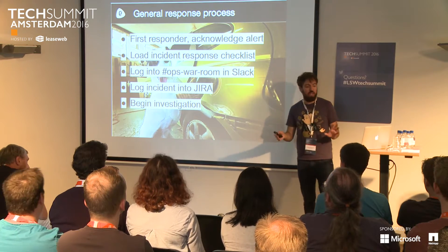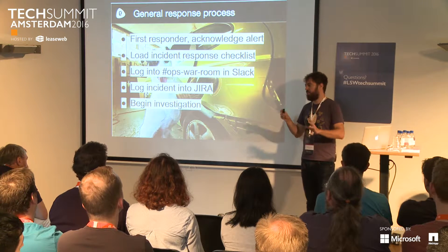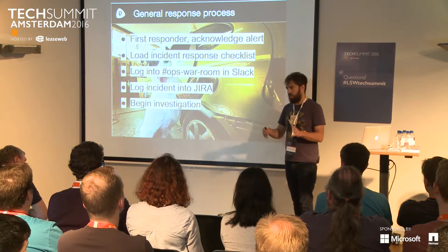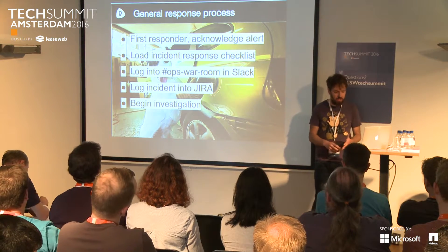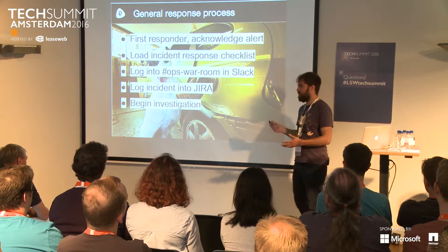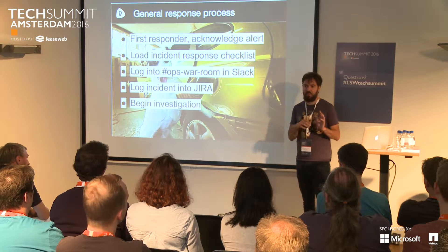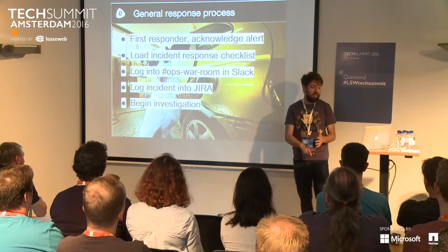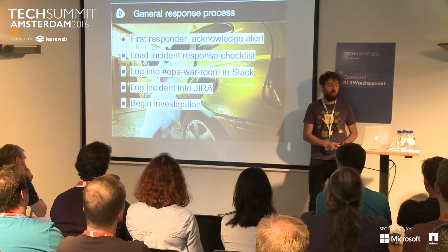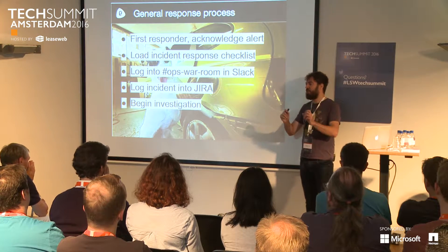So we created what we call the General Response Process. Every time there is an incident, instead of immediately starting to look at what's wrong, we follow this process. First, you acknowledge the alert — we use PagerDuty — so the rest of the team knows someone is working on it. Second, you load the incident response checklist. Then you go into our dedicated incident chat room in Slack.